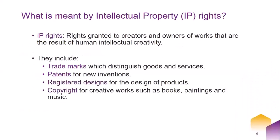IP rights are the rights granted to creators of works that are the result of human intellectual creativity — something created using your mind, for example a story, an invention, an artistic work, or a symbol. Types of IP rights include trademarks, which consist of a recognizable sign, design, or expression identifying products or services of a particular source from those of others. Patents are another type — an exclusive right granted for an invention. Registered design protects only the shape or appearance of a product, giving its owner exclusive rights to that design. And the final type is copyright, which is the protection offered for creative works such as books, music, literary works and so on.